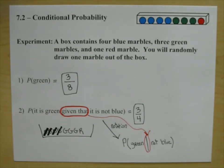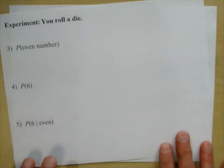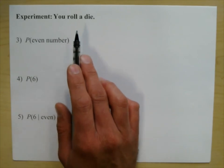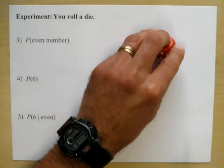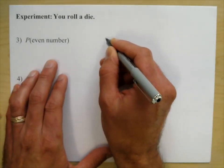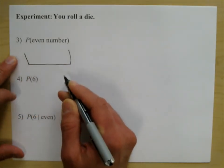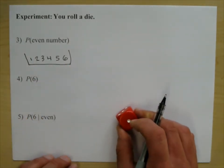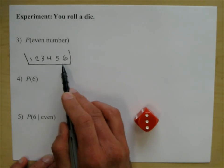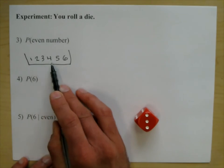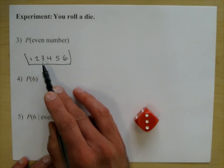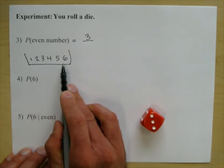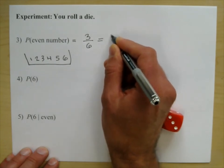Let's go ahead and do problem number three — we'll change the experiment. The experiment is you roll a die, which has one through six. Rolling this die is the same as having six marbles in a box. What's the probability you pull out an even number? There are three even numbers out of six, so the probability of rolling an even number is one half. That is not a conditional probability — there's no 'given that.'